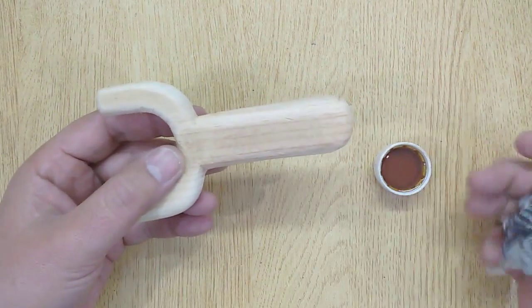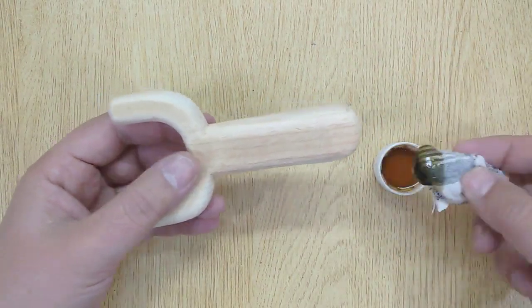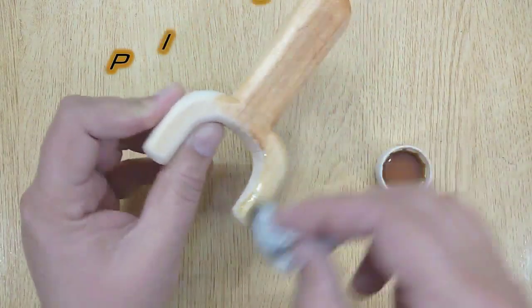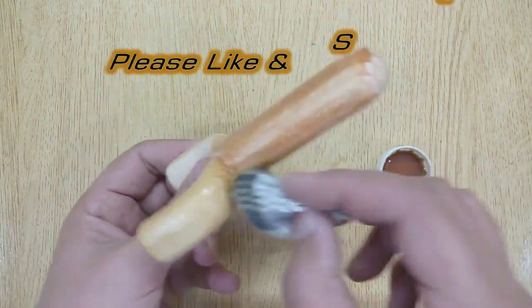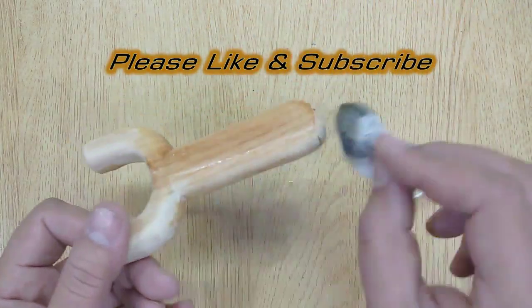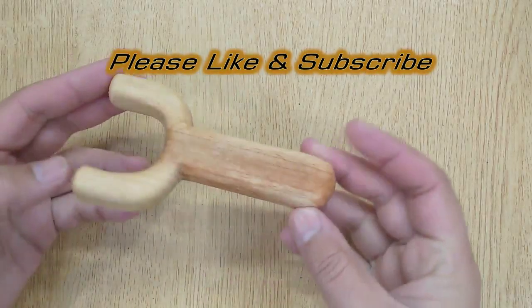And at last apply some linseed oil to this wooden slingshot handle to make it bright and shine, and you are done.